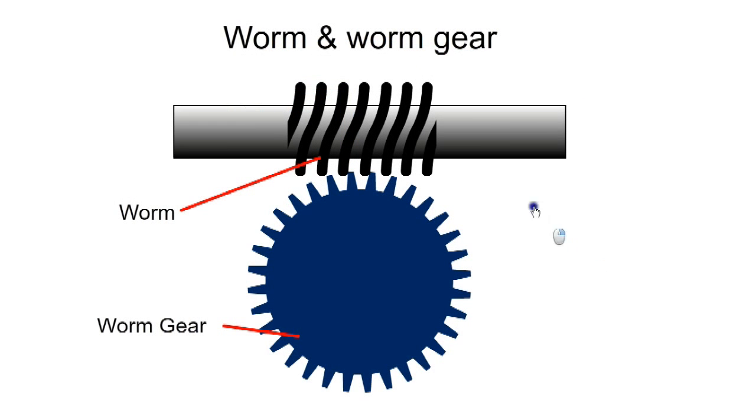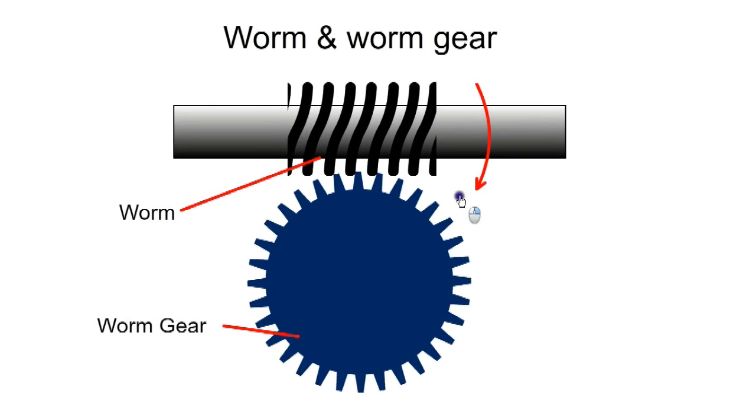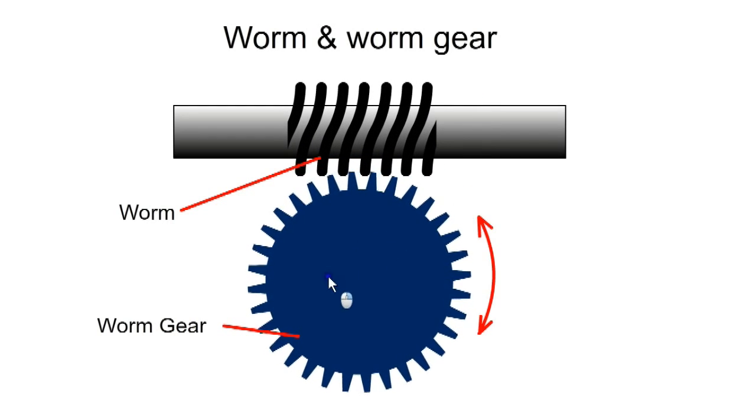The word torsen is derived from torque sensing. The principle is based on a worm and worm gear. When the worm is rotated, it drives the worm gear. But the gear cannot drive the worm.